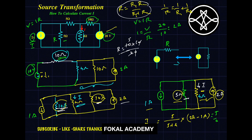By simplifying, the current I through the 4 ohm resistor is 5/9 amperes, which is approximately 555.5 milliamperes. This completes the simplification using source transformation.